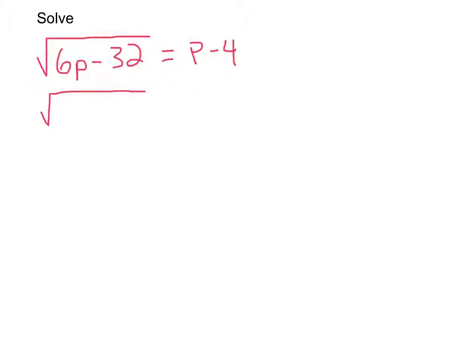So let's do that now. This is 6p minus 32, and all I'm going to do is square that side. But what I do to one side of my equation I have to do to the other. So p minus 4 squared.